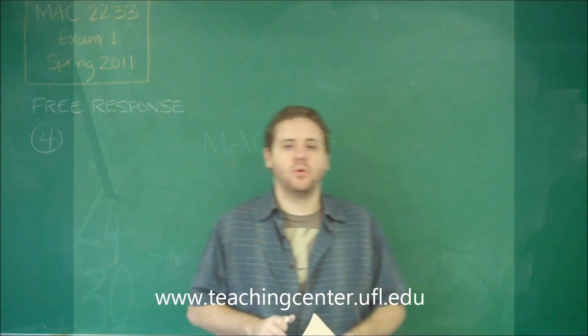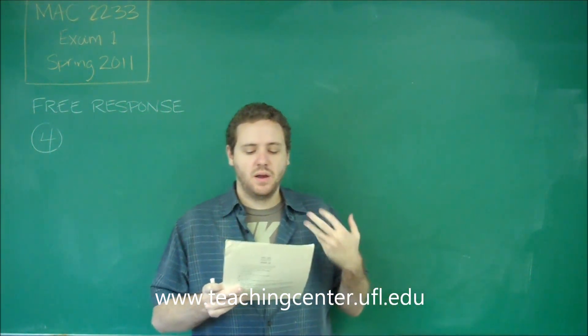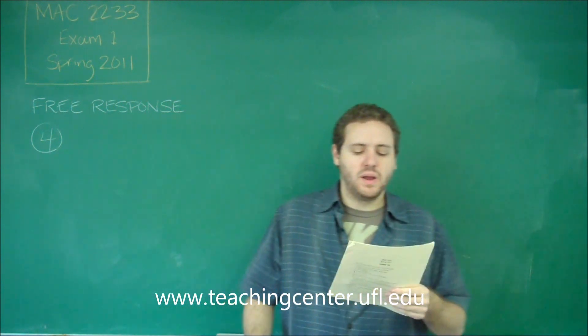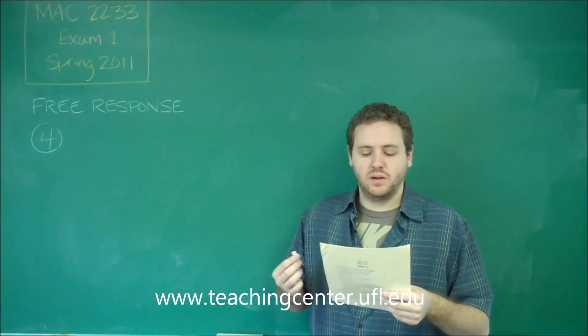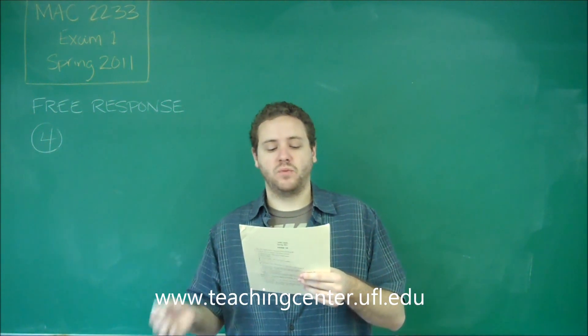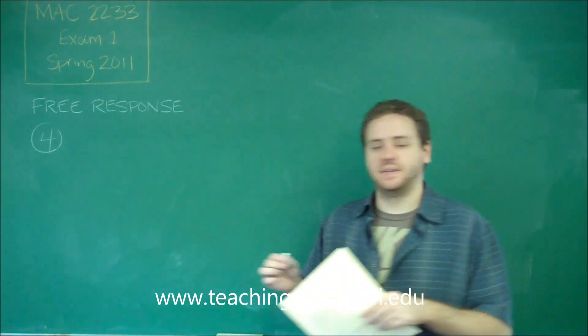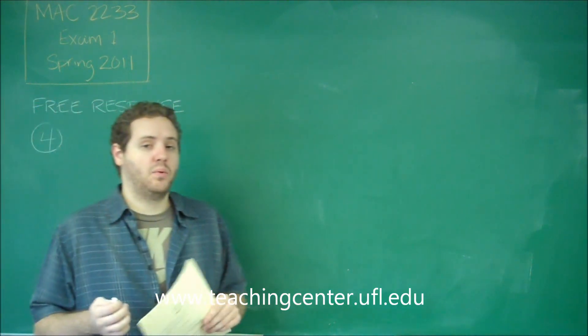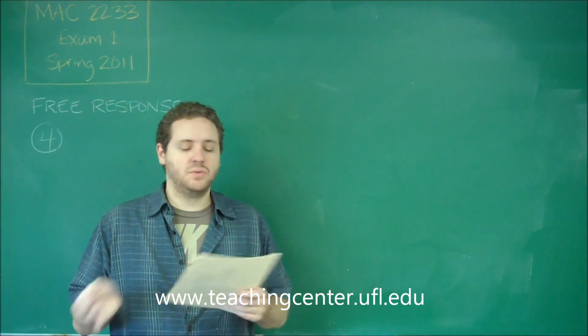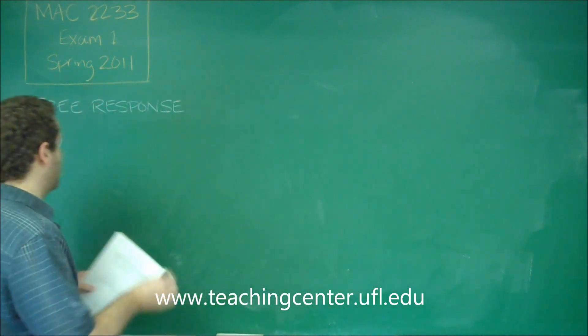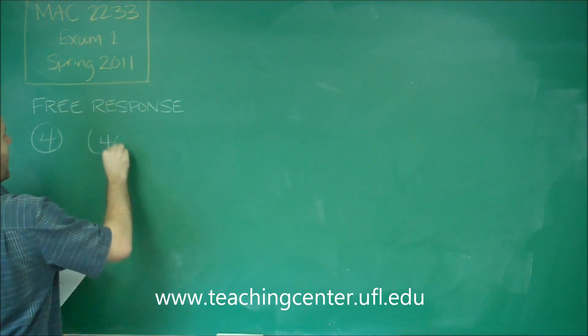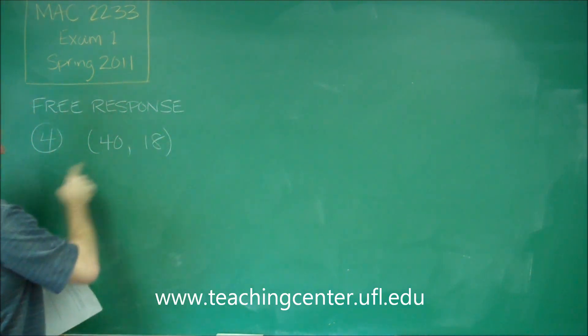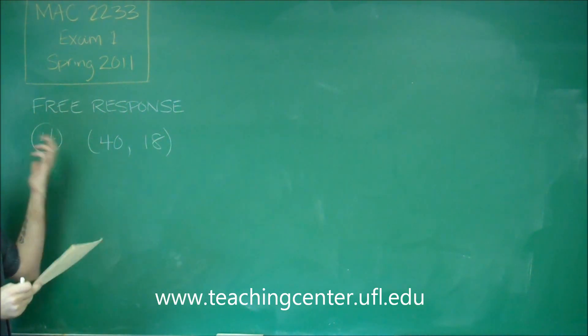Okay, so for number four we're going to use our economic principles in more of an application style question. We have that the manager of a mall t-shirt stand in a normal week, he would sell 40 t-shirts at a price of 18. What's important to note is that that constitutes a coordinate point. Remember that your number of units is always the X. So, at 40 units sold, the price was 18.